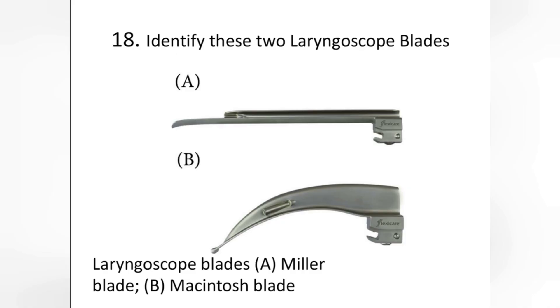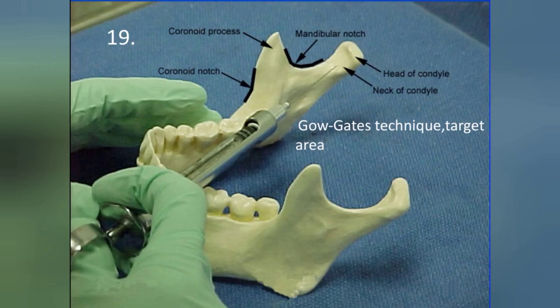This next question is a recapitulation from a previous video. You have to identify these two laryngoscope blades. The first one is the straight blade — that is the Miller blade. The second one is the curved blade — that is the Macintosh blade. So the straight one is the Miller blade and the curved one is the Macintosh blade.